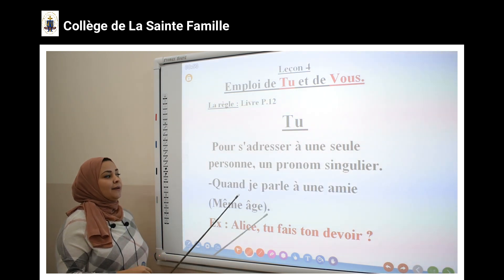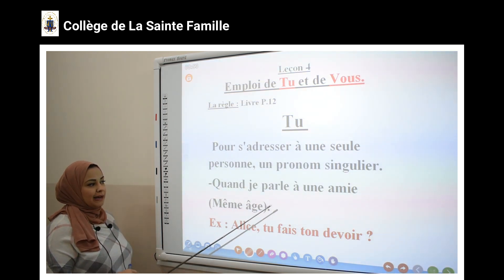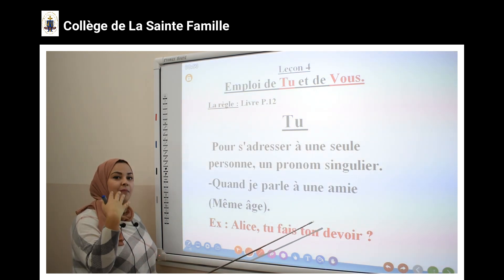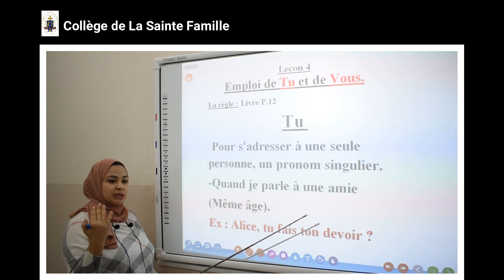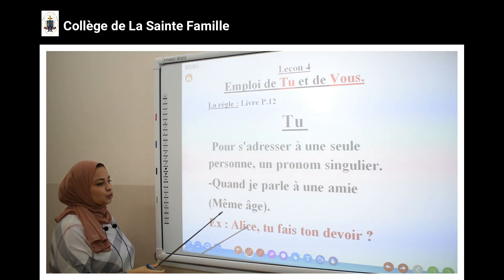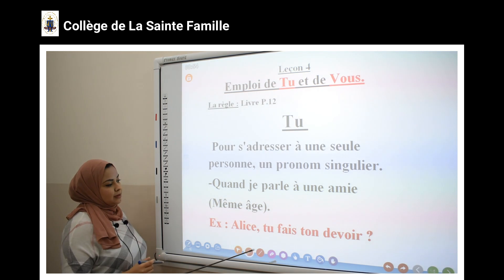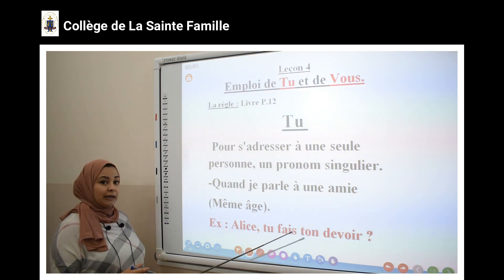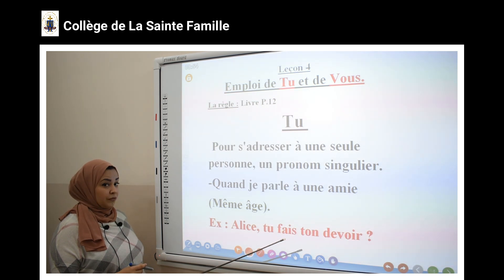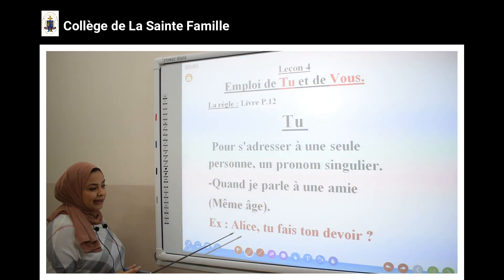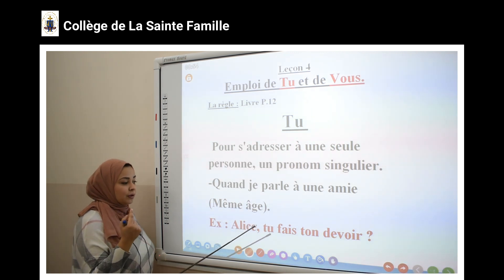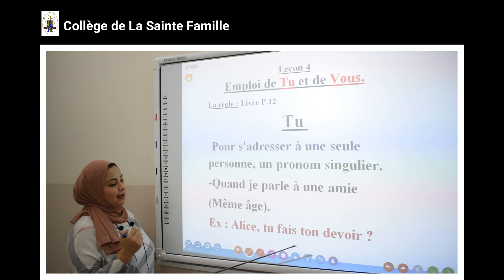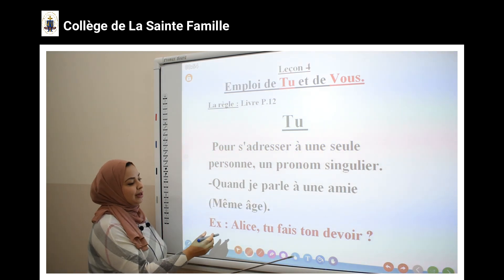C'est un pronom singulier. Ou bien, quand je parle à une amie. Alors, je parle avec mon amie. C'est-à-dire, je dis « tu ». J'utilise le pronom « tu ». Exemple, regardez : « Alice, tu fais ton devoir. » Alors, je parle maintenant avec Alice seulement, avec une seule personne. Alors, j'utilise le pronom « tu ».